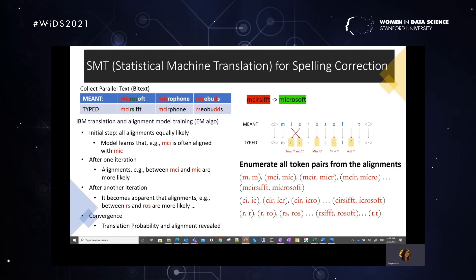So with the initial step, the model can quickly learn that MCI is often aligned with MIC. And then after one iteration, the alignments like MCI, MIC are more likely because the model is going to see more and more such occurrences in the training data. And then after some more iterations, it becomes apparent that the RS and ROS are more likely to be a pair. So at the end, the model will converge and then we will get our translation probability estimated and also the alignment will be revealed by this EM algorithm.